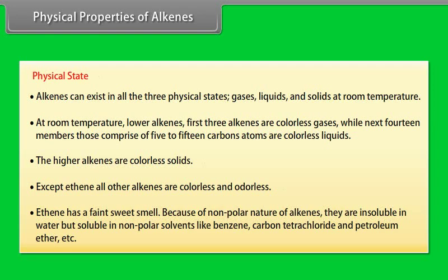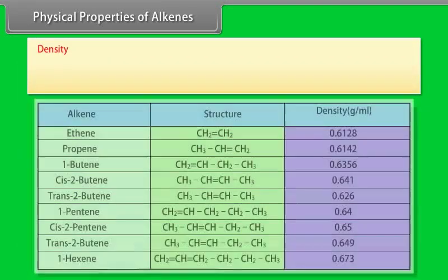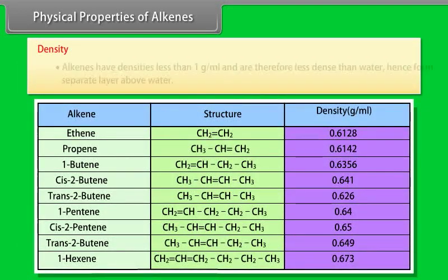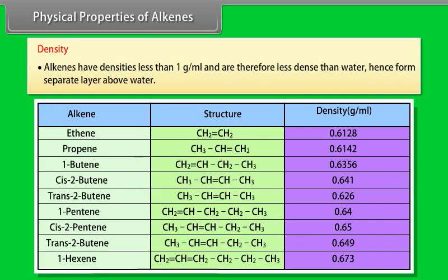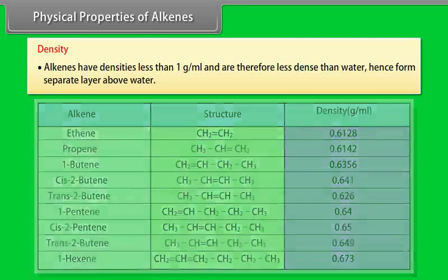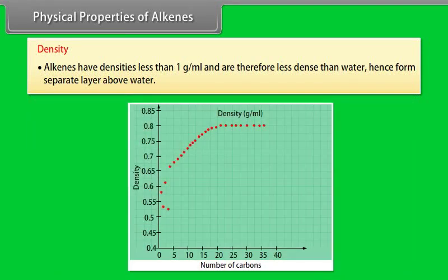Because of the non-polar nature of alkenes, they are insoluble in water but soluble in non-polar solvents like benzene, carbon tetrachloride, and petroleum ether. Density: alkenes have densities less than 1 gram per milliliter and are therefore less dense than water, hence forming a separate layer above water. As the molecular mass of alkenes increases, density increases.